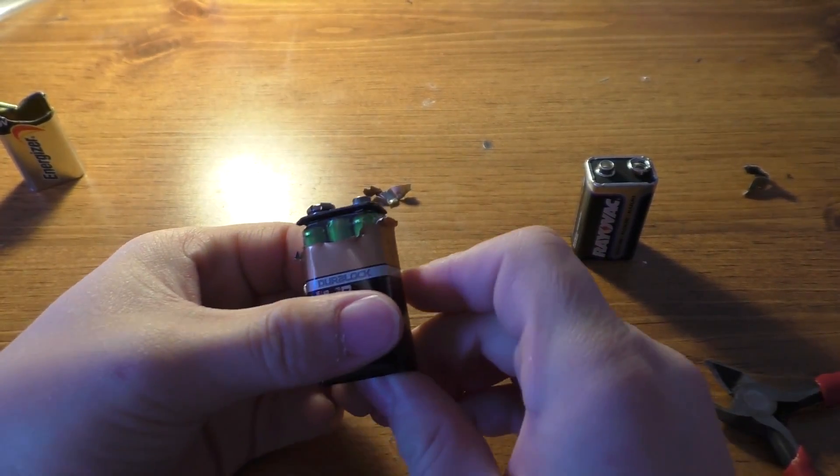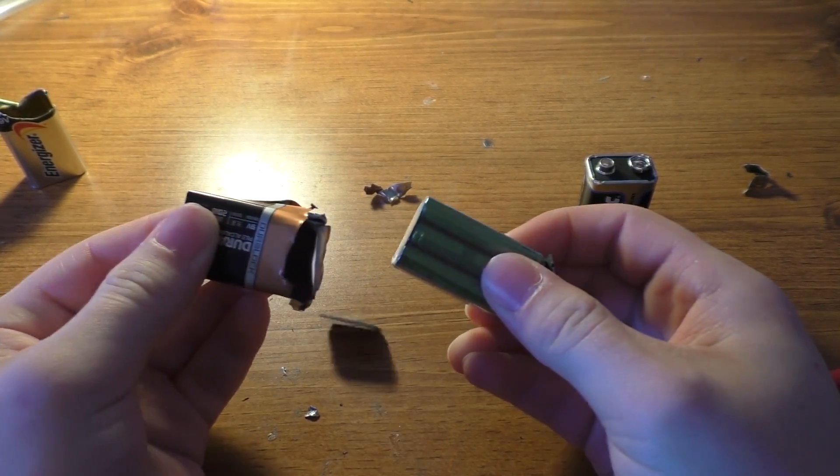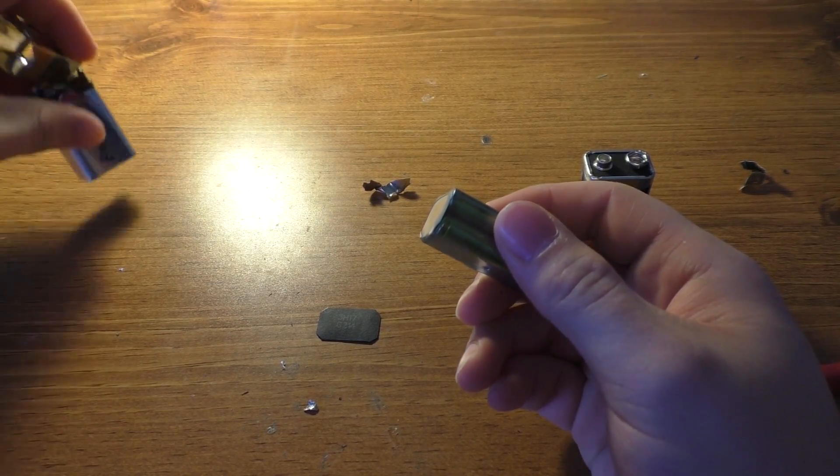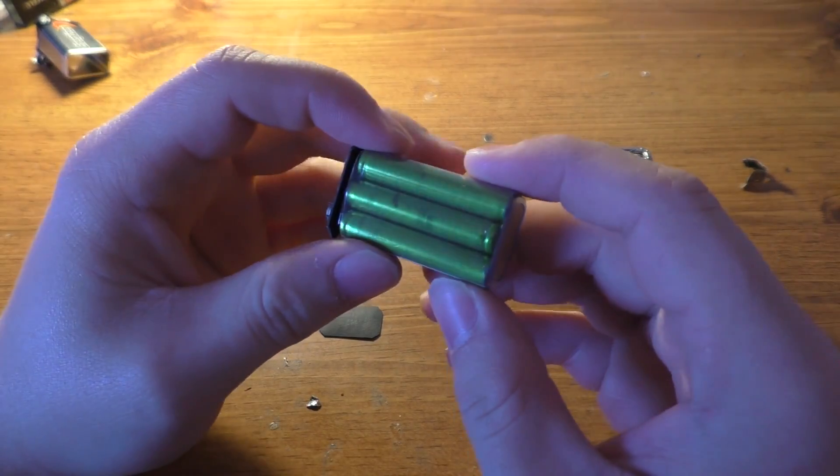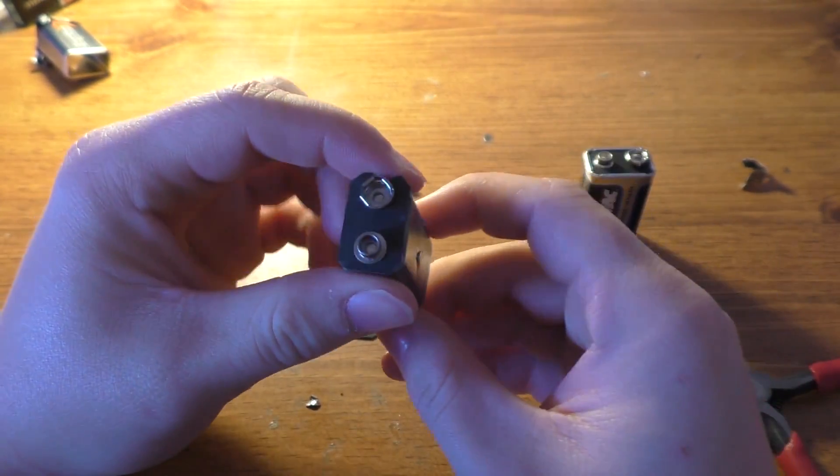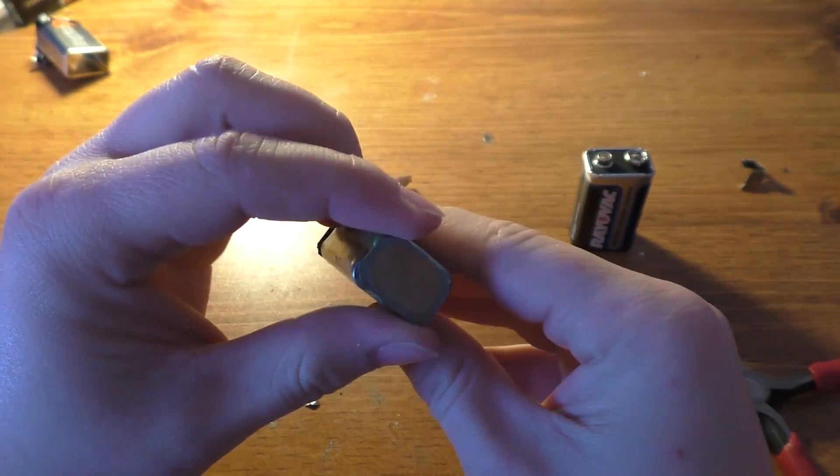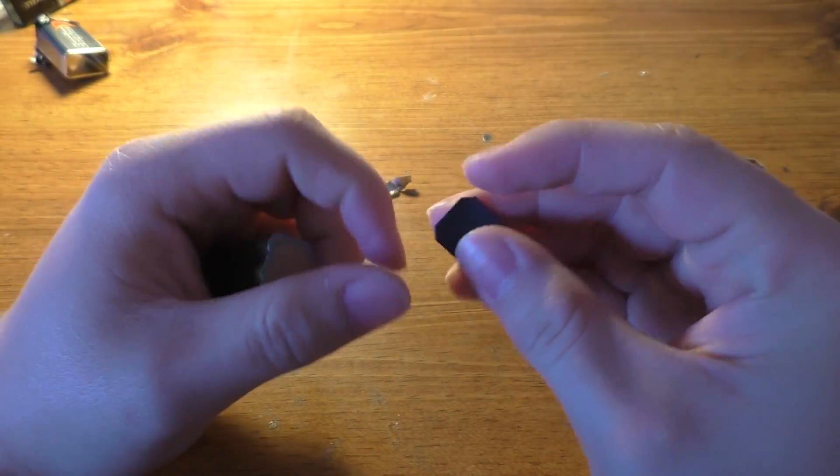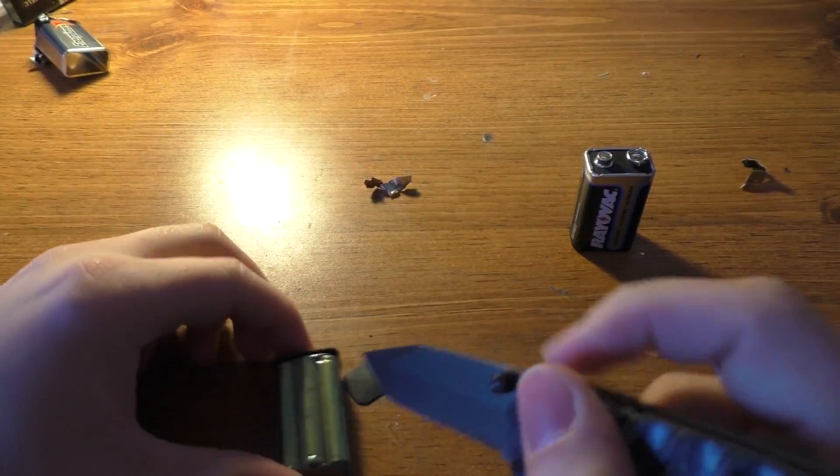All right. Let's see if I can get this thing out of here. Again, empty casing. And this one is actually a little bit different. As you can see, these cells are actually shrink-wrapped with plastic there. This end piece is just a piece of plastic. There's nothing on that. Let's go ahead and cut that plastic off of there.